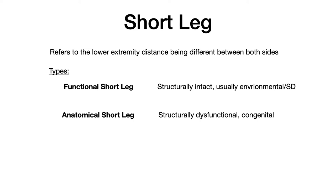The most common type of functional short leg is a hip replacement. If somebody has an artificial joint put into their hip, this is going to alter the normal mechanics of the hip extending down through the lower extremity. When you compare both sides, one leg to the other, one will be shorter. It's very high yield to know that the most common cause of a functional short leg is a hip replacement.